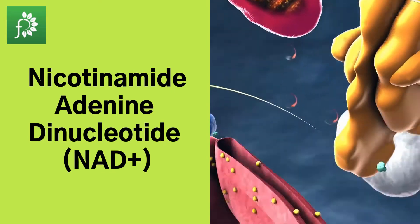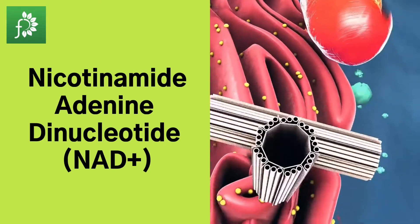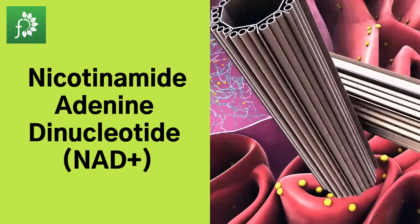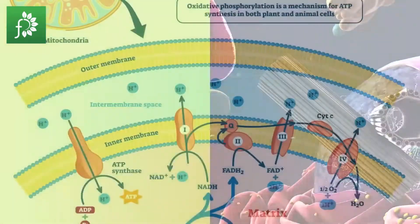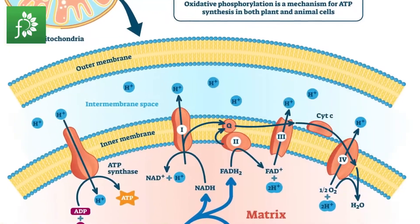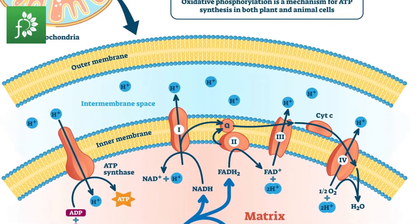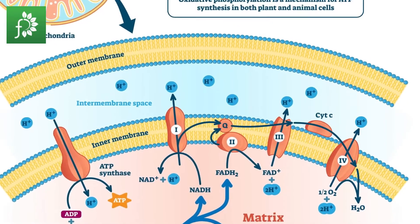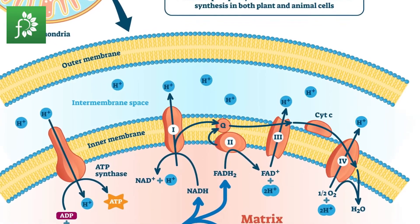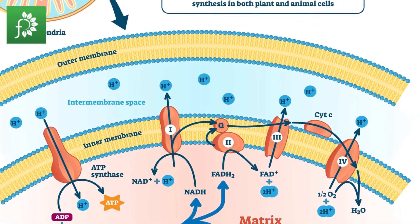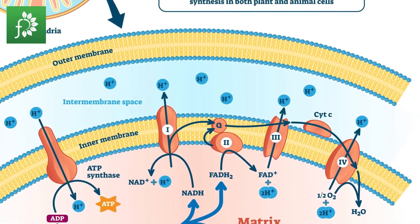Nutrients provide high-energy electrons in the form of NADH, which are used by the protein complexes to pump protons from the matrix to the intermembrane space.